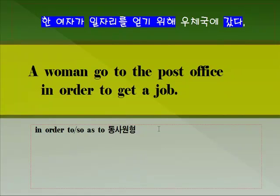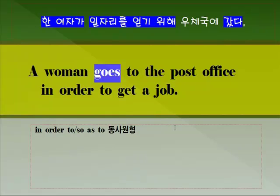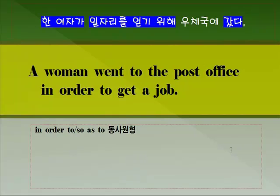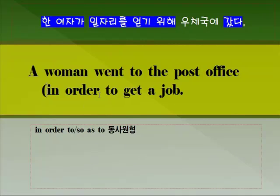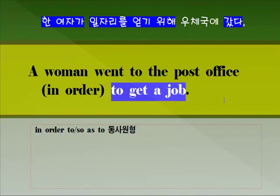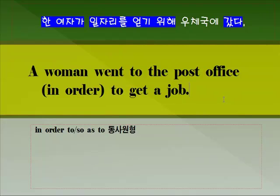문장을 보세요. 어디가 잘못됐습니까? 시제가 맞지 않죠. 현재라 하더라도 'goes'로 나타내야 되고, 우체국에 갔다니까 과거인 'went'를 써야 올바른 표현이 됩니다. 또한 'in order to get a job'에서 'in order'를 생략하고 'to get a job'만으로도 의미가 충분히 전달됩니다. 하지만 'in order to'는 많이 나오니까 잘 정리해 두시기 바랍니다.